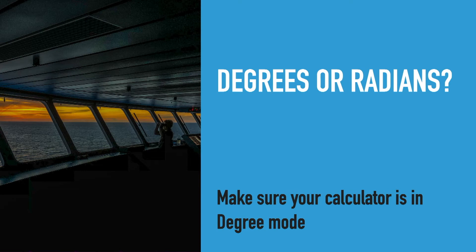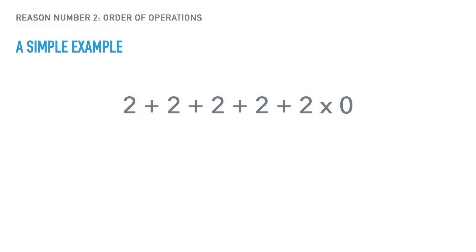The second reason that people receive the wrong answer is down to not understanding the mathematical rule to do with order of operations. This is best demonstrated using a simple example that you'll occasionally see on Facebook. This question, depending on how you treat it, has two answers, although only one of them is actually correct. If we carry out the calculation as if someone were speaking the figures to us, we would do 2 plus 2 which is 4, plus 2 which is 6, plus 2 which is 8, plus 2 which is 10, and then multiply by 0, which would give us 0. This however is not correct.